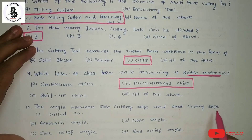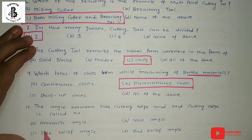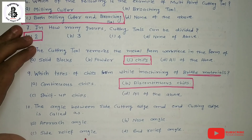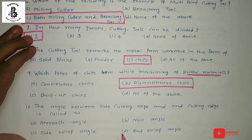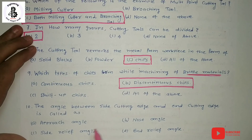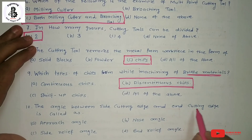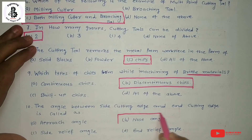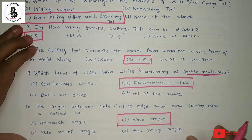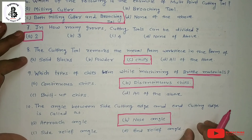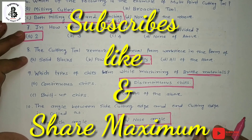Tenth question: The angle between the side cutting edge and the end cutting edge is called what? Options are: approach angle, nose angle, side relief angle, and end relief angle. For detailed study, a link for the nomenclature of single point cutting tools is given in the description. The answer is nose angle. This video covered almost 10 objective type questions important for examinations. Please subscribe and share Modi Mechanical Engineering Tutorials. Thank you.